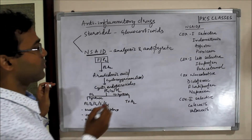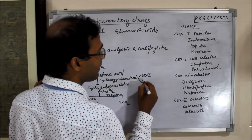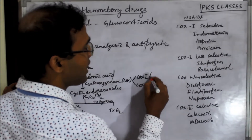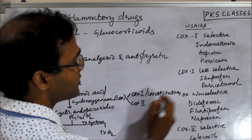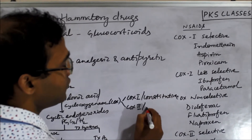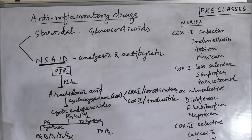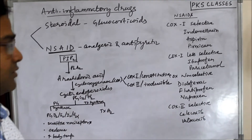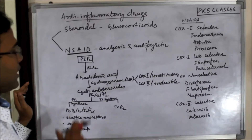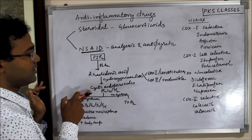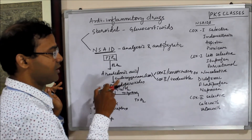The COX pathway — COX is of two types: COX-1 and COX-2. COX-1 is constitutive, meaning it is always present. COX-2 is inducible — it is induced during inflammation or during any injury. Whereas COX-1 is always present. Because of COX action, there is production of cyclic endoperoxides and prostaglandin G2 and H2.